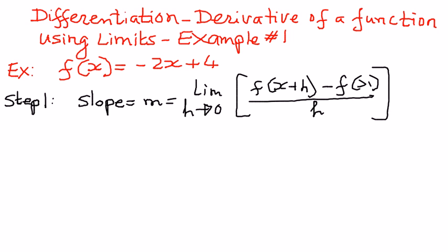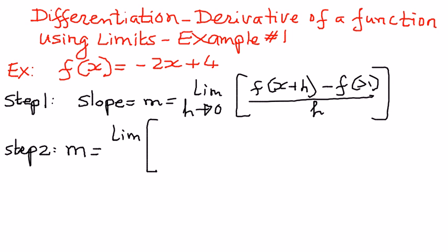As a second step, we are going to substitute the given function into this formula. So slope m is equal to the limit of the given function f of x, which is negative 2x plus 4. The way we can write this one out is as follows.